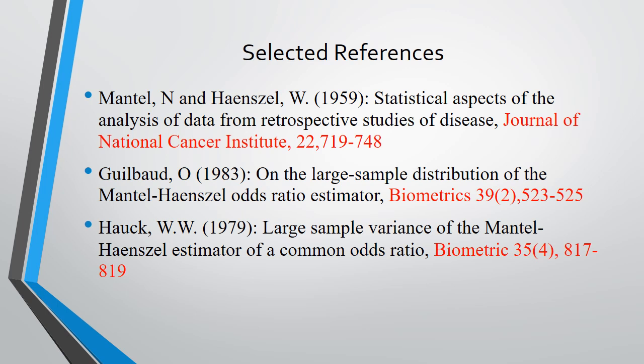You can see here the selected references on this topic. Mantel N. and Haenszel W., 1959, is the original work: 'Statistical aspects of analysis of data from retrospective studies of diseases,' Journal of National Cancer Institute, 22, pages 719–748. Another is Wilbur O., 1983, 'On the large sample distribution of Mantel-Haenszel odds ratio estimators,' in Biometrika. Also Hurks W.W., 1979, 'Large sample variance of Mantel-Haenszel estimators of common odds ratio,' Biometrics, volume 35. There are many other references, but these are the important ones dealing with the Mantel-Haenszel test. Thank you very much.